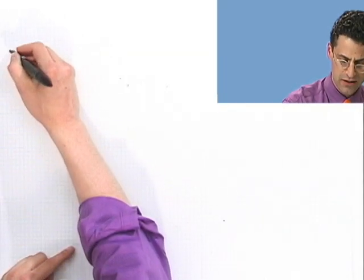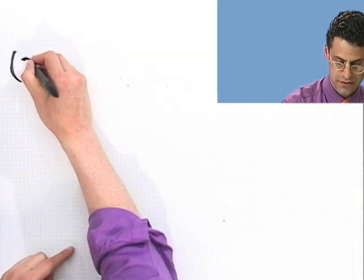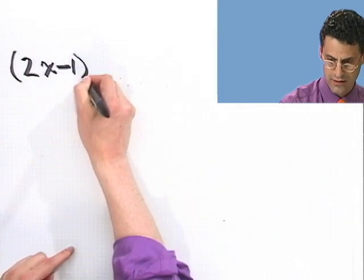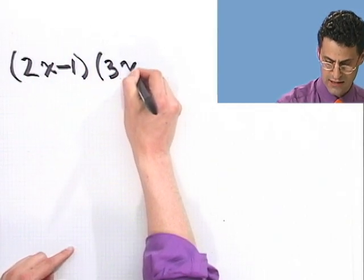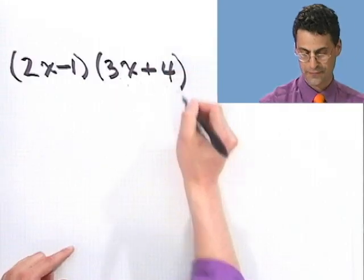Multiplying, a big deal. Yeah, multiplying is a big deal because there's so many little teeny things. For example, let's take a look at this one: (2x - 1)(3x + 4).